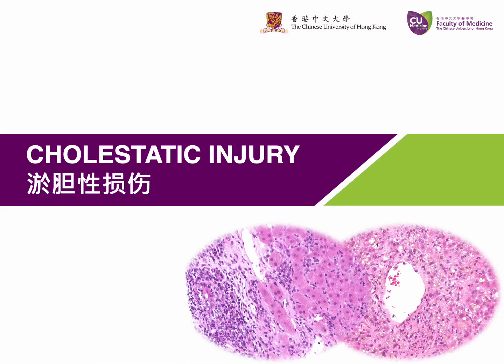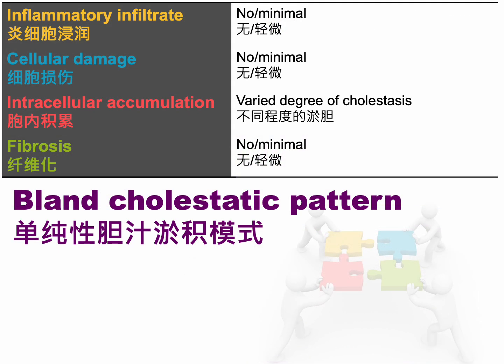After thoroughly examining the various patterns associated with hepatic injury, it is now time to shift our focus toward another significant category of liver pathology: cholestatic injury. The first pattern of cholestatic injury is known as the bland cholestatic pattern. This pattern features varying degrees of lobular cholestasis, yet it notably lacks significant necroinflammatory activity or fibrosis. Certainly, bile duct injury and ductopenia should be absent.